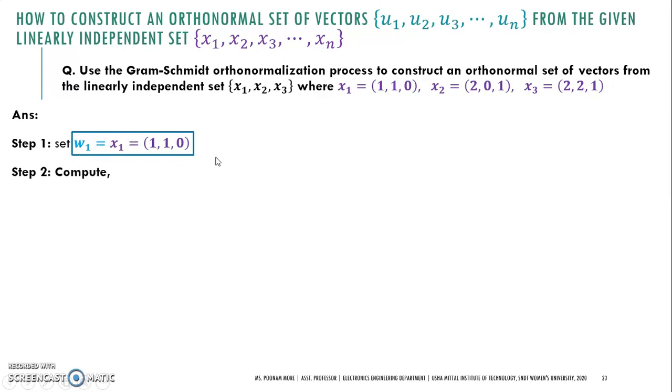In Step 2, we compute X₂ minus the inner product of X₂ with W₁ divided by the inner product of W₁ with itself, and this whole term multiplied by W₁. After substituting the values, this factor reduces to X₂ minus W₁, which equals (2, 0, 1) minus (1, 1, 0) equals (1, -1, 1). We set this factor equal to the next orthogonal vector W₂.